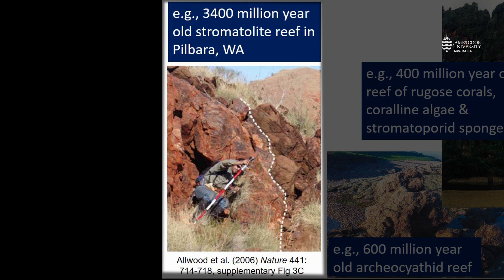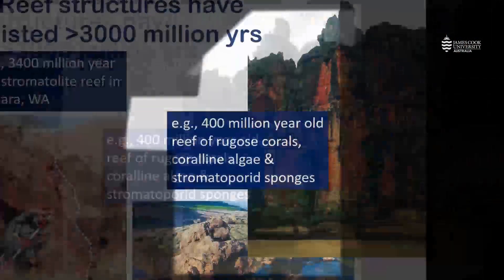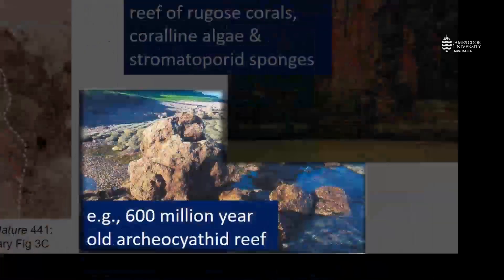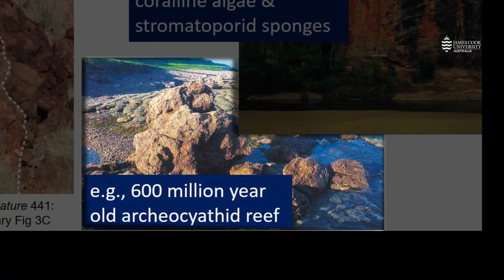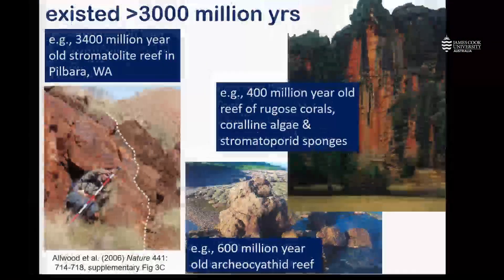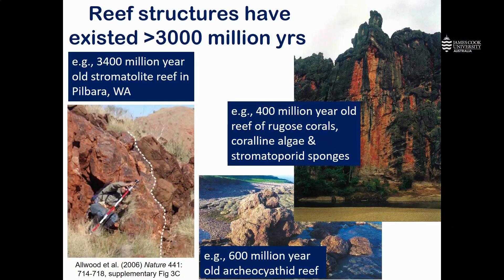We also have some evidence in Australia of reefs of the age of about 400 million years, which were constructed by rugose corals, coralline algae, and special sponges. We also have some structures made from archaeocyathids, and I'll show you an image of these in a moment. The main thing to remember is that the modern coral reefs we have today were preceded by reef-like structures formed by very different animals.